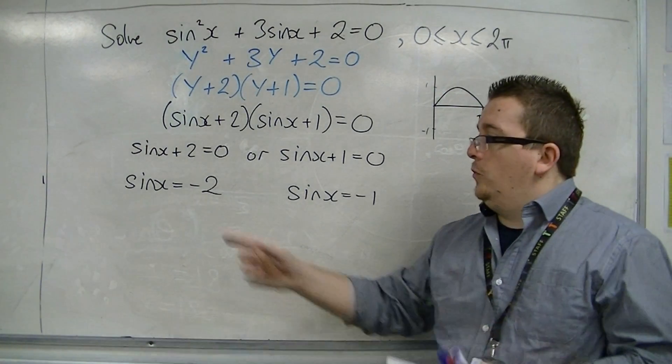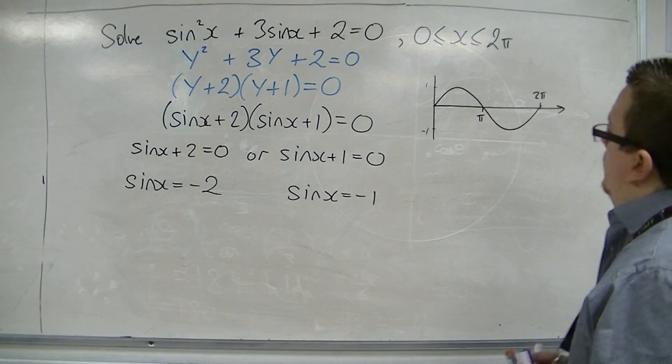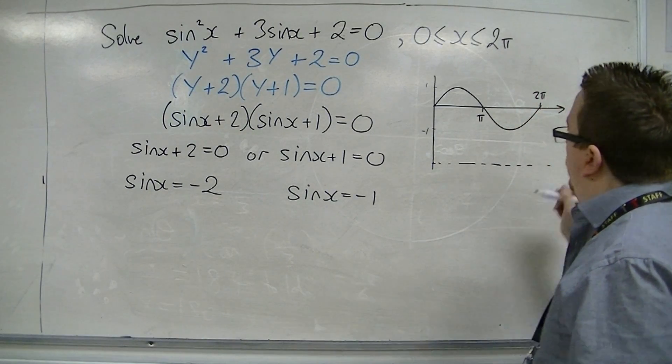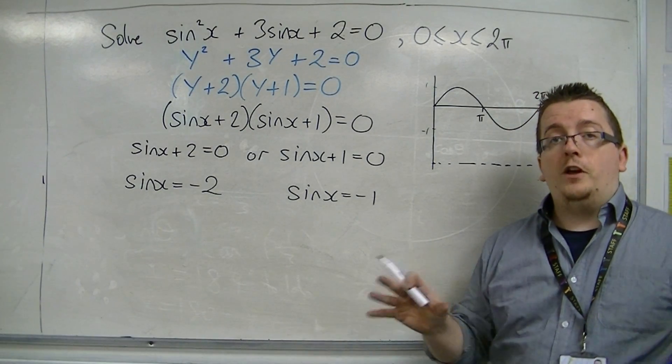Now, sine x equals minus 2. Minus 2 is all the way down here. And as you can see, the sine curve doesn't go down that far.